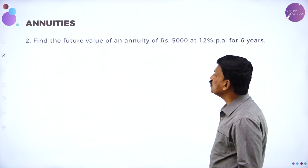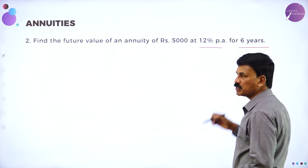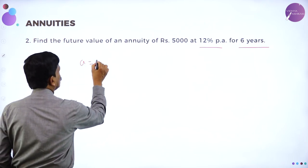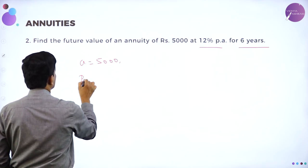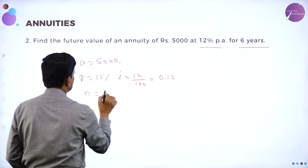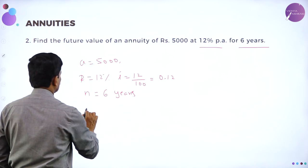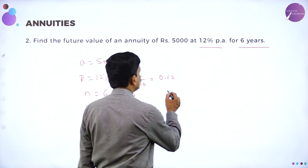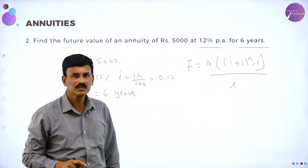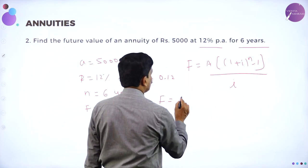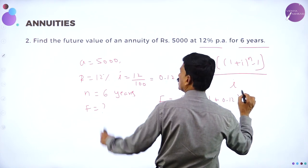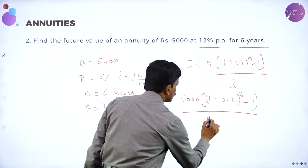Find the future value of annuity of rupees 5,000 at 12 percent per annum for 6 years. A equals 5,000, I equals 12 divided by 100, that is 0.12, and N equals 6 years. The formula is: F equals A into (1 plus I) to the power of N minus 1, divided by I. Substituting: F equals 5,000 into (1.12) to the power of 6 minus 1, divided by 0.12.